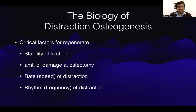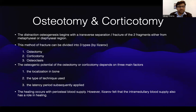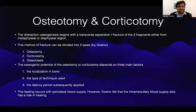Distraction osteogenesis begins with the transverse separation or oblique fracture of the two fragments, either from the metaphyseal or diaphyseal region. This method of fracture can be divided into three types: osteotomy, corticotomy, or osteoclasis. The osteogenic potential of the osteotomy or corticotomy depends on three major factors: the location in the bone, the type of technique used, and the latency period subsequently applied. The healing occurs with the periosteal blood supply; however, Ilizarov felt that the intramedullary blood supply also has a role in healing.